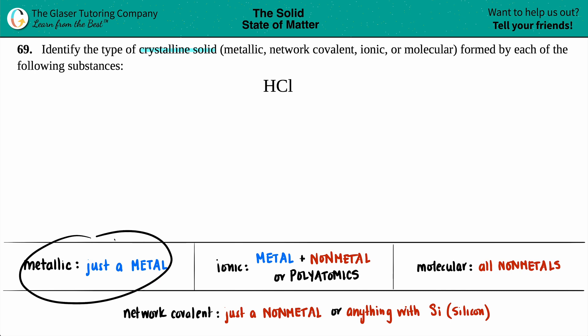So is it a metallic crystalline solid? Well, the word metal is in the word metallic. So in order to be a metallic crystalline solid, you gotta have a metal, right? And you have to have only one metal. But if I look for HCl on the periodic table, I look for the elements. Hydrogen, even though it's in group one, is a non-metal, even though it's in group one.